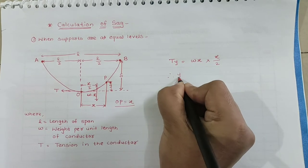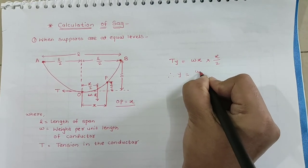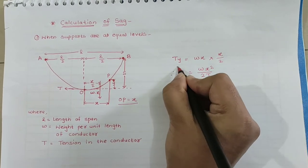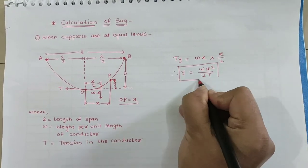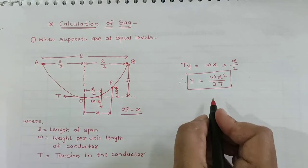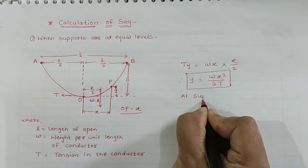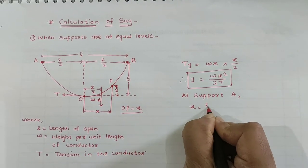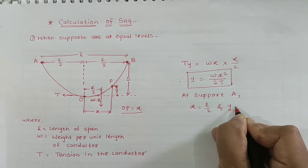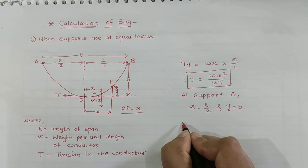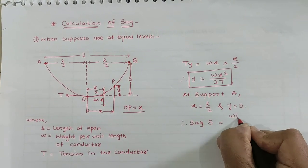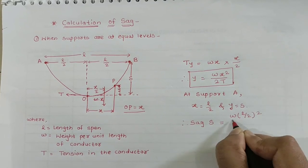That is, Y = WX²/2T. The maximum sag is represented by the value of Y. For example at support A, X = L/2. So sag = W(L/2)²/2T = WL²/8T.